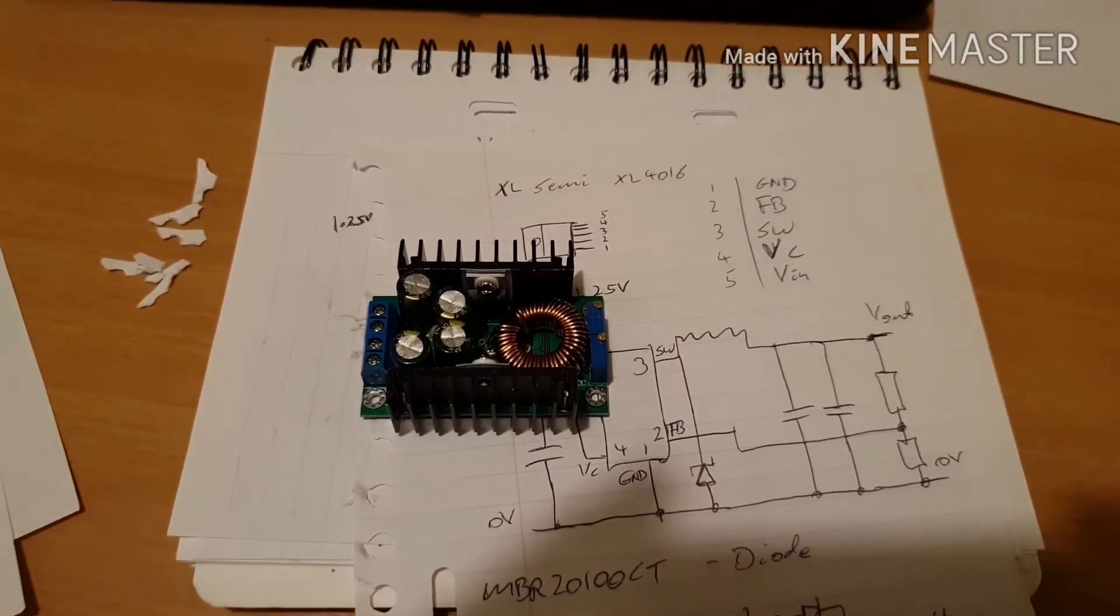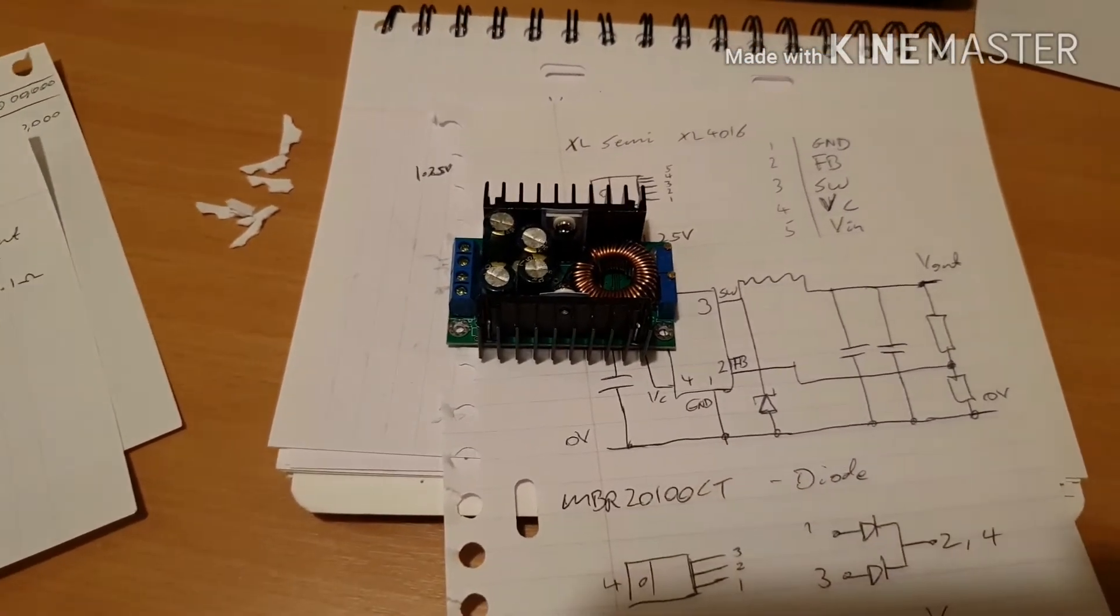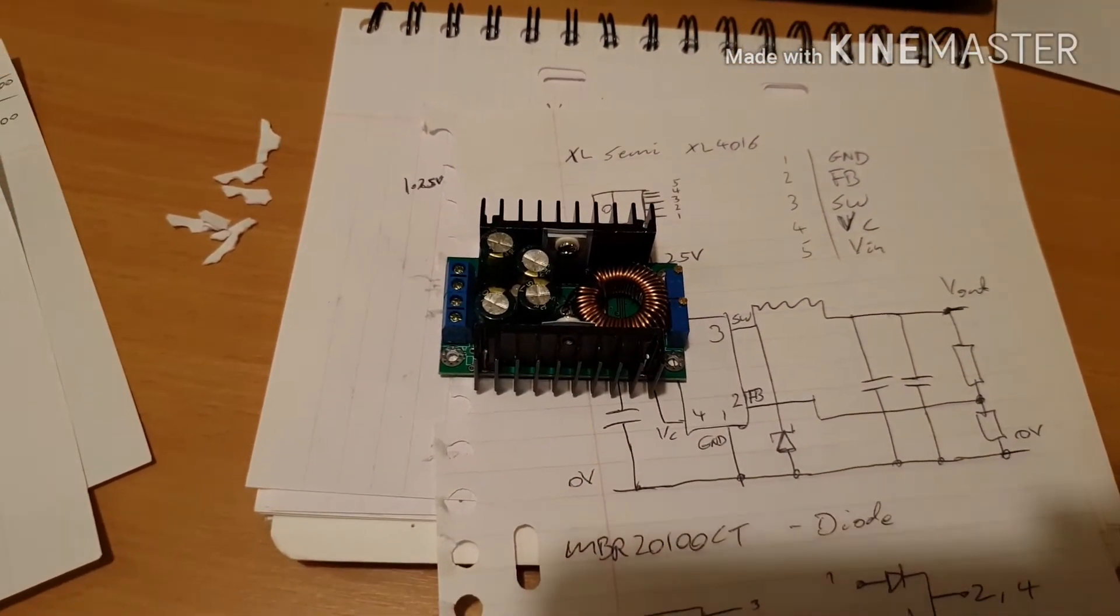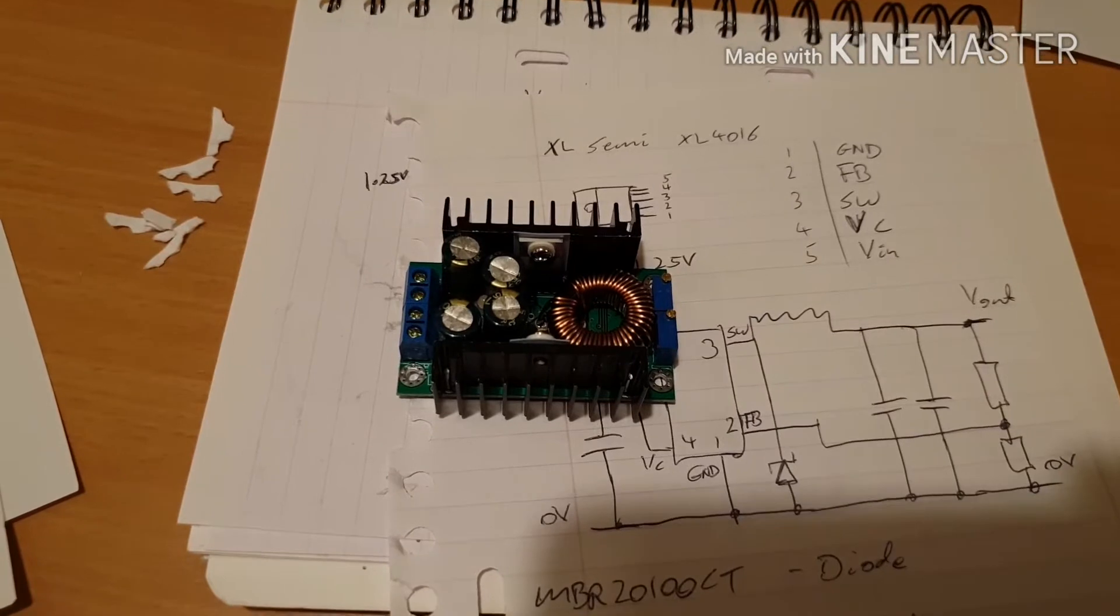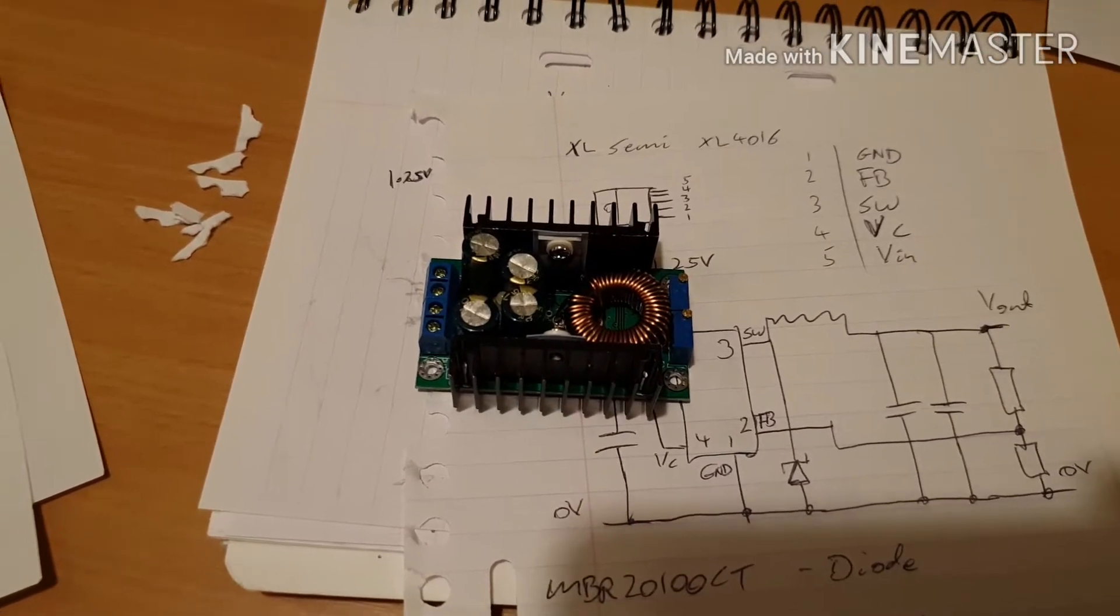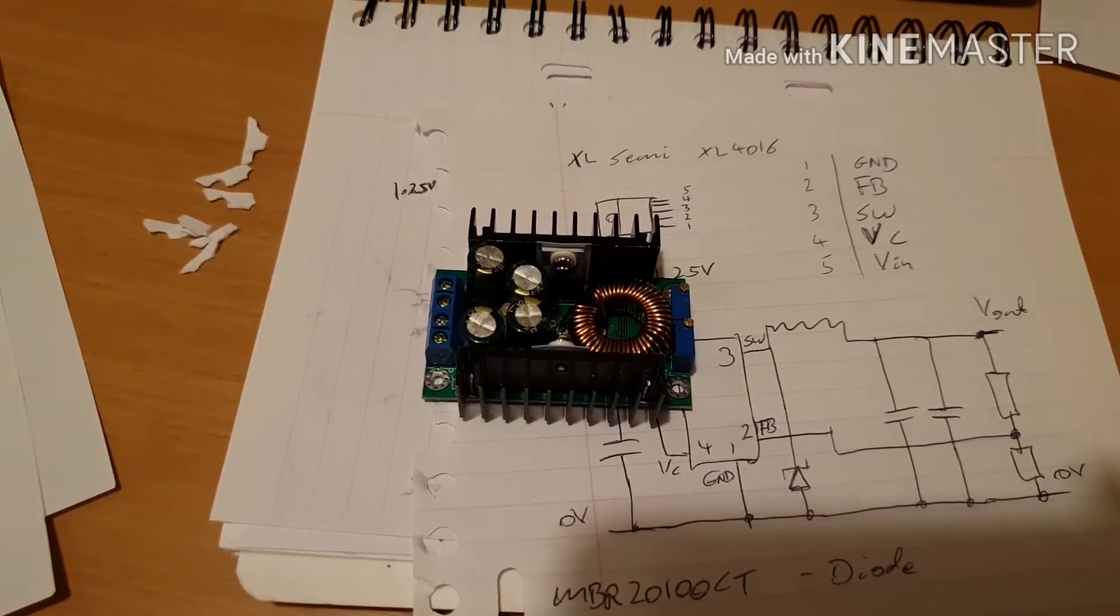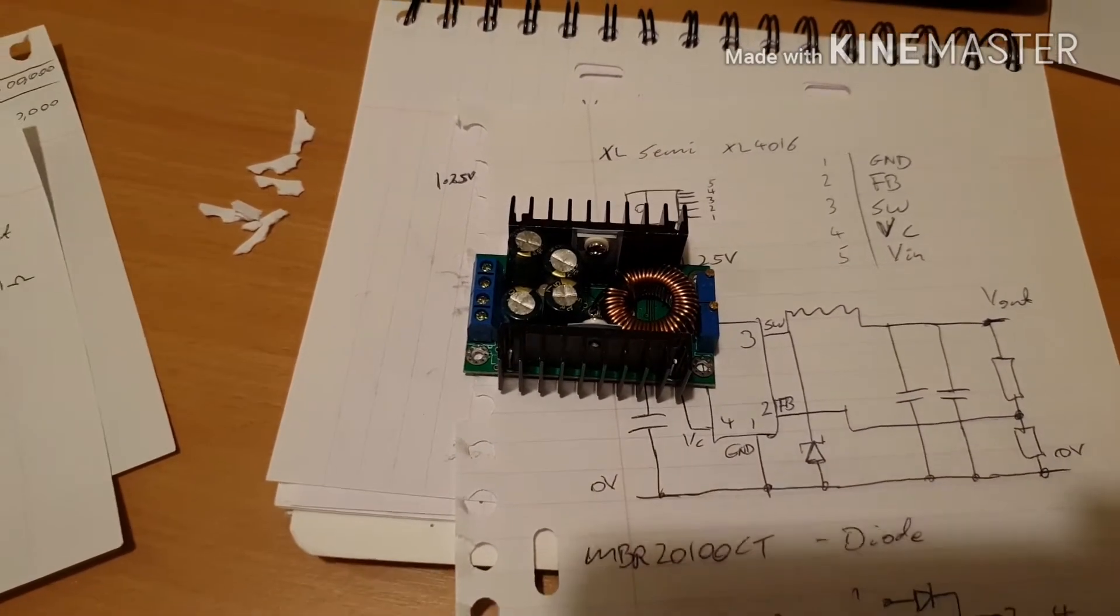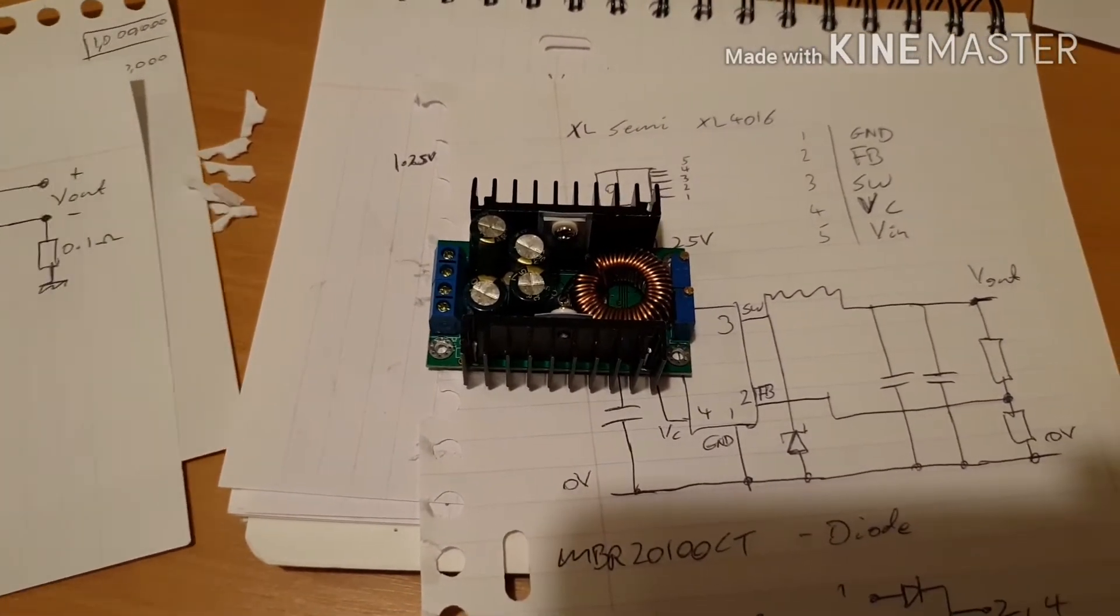This is just a sideline to my main video on building a Peltier-based beer cooler. This is the power supply for the Peltier device. It was purchased as a constant current or constant voltage power supply module from eBay. However, it was found that it doesn't work.